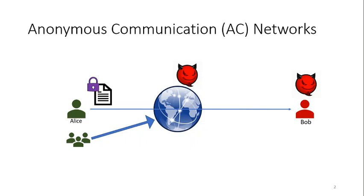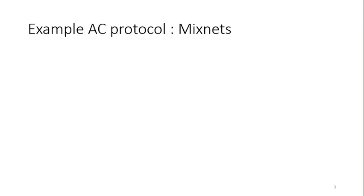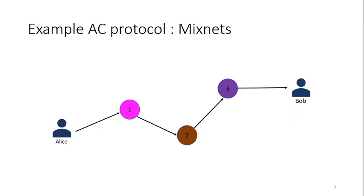Alice is the sender here, and that's why we are calling it sender anonymity. For this talk, we shall focus on sender anonymity only. There are many protocols which can achieve such a property. One prominent example is a mixnet-kind of protocol. Here Alice wants to send a message to Bob, but she doesn't send the message directly. Instead, she encrypts the message and sends it through routing nodes 1, 2, and 3.